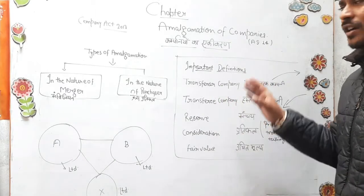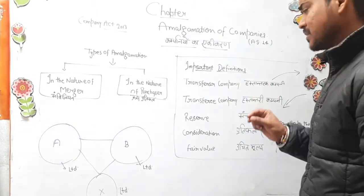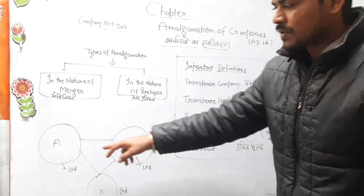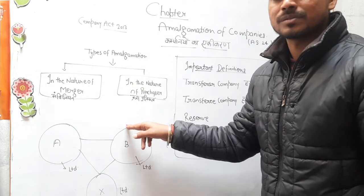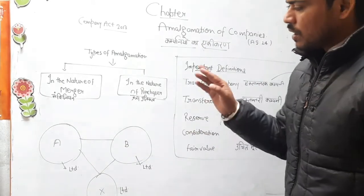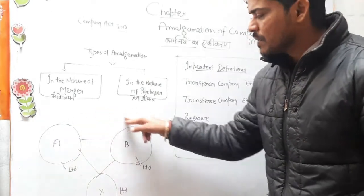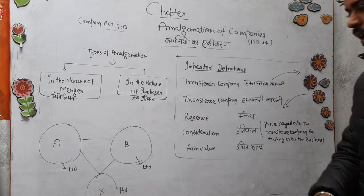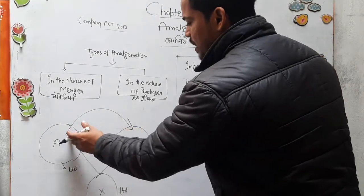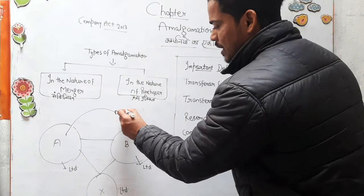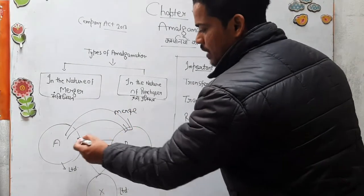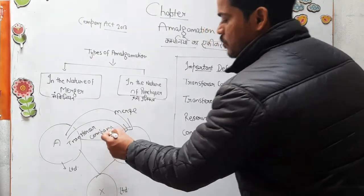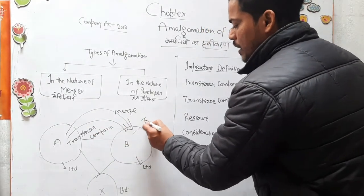कुछ important terms हैं जिनको हमें समझना बेहद जरूरी है। Transferor company — यह वो company है जो किसी दूसरी company में चली जाती है, merge हो जाती है। जब A company, B company के साथ आकर के मिल जाती है, merge हो जाती है, तो जो company transfer होकर आई है वो हो गई transferor company।